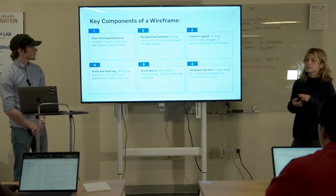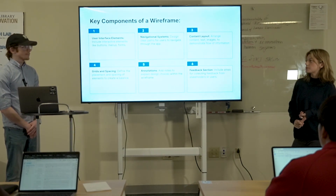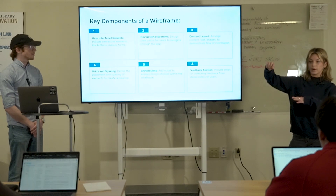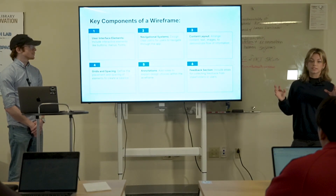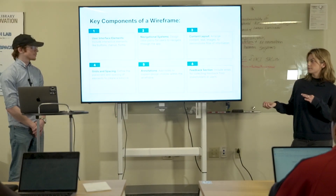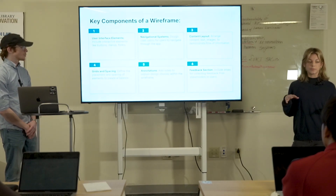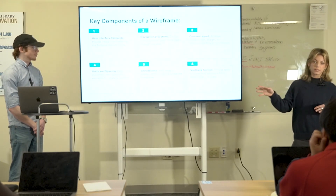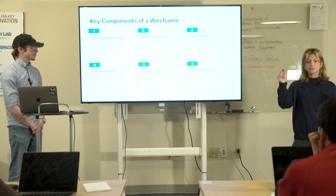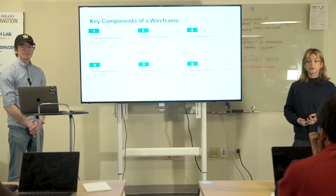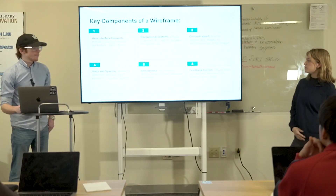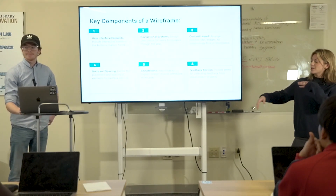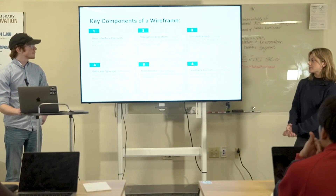Some key elements to consider when you're building these sketches are the interface elements — things like buttons and menus. Navigation system: making sure it makes sense to the user and mapping out where they're going next. Content layout, which is arranging the content so it would be intuitive to the user. Grid and spacing refers to the placement and spacing — you want things to look balanced and organized. Annotations: it's important to add thought bubbles and annotations explaining what you want to do with your design, because to you it might be a square representing something, but the person viewing it isn't going to know that. And then having a feedback section — it's always important because you want to talk to your target market and understand their interpretation of your sketches.